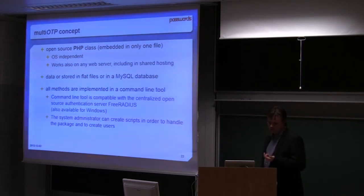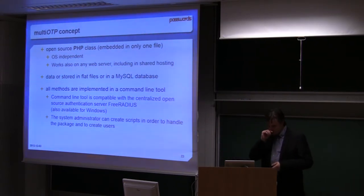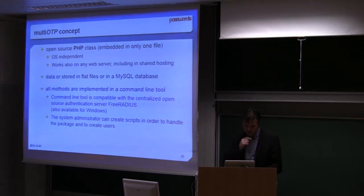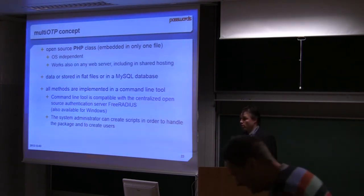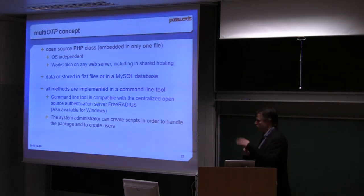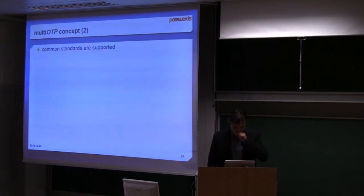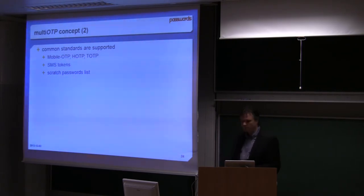Data are stored in flat files at the beginning, but you can also choose a MySQL database now. That was also by design because we want to make a very cheap device after, like this one. If you use SQLite and you remove the power at not a good moment, perhaps all your database is crushed. So we decided to make flat files. All methods are implemented in command line tool. We have a separate command line tool which includes the library, and you can do what you want with this one. It's compatible with the centralized open source authentication server free radius which we use, and it's also available in Windows. The system administrator can create scripts in order to handle the package and to create users. If you have a list of users, you just make all your lines, one line per user, and you can create all the users you want.